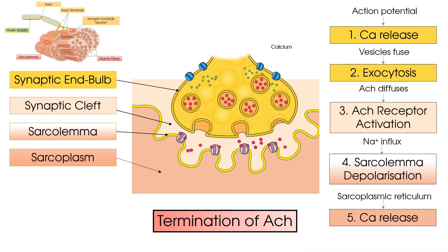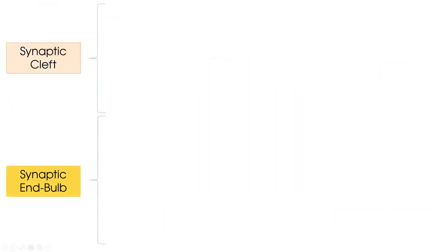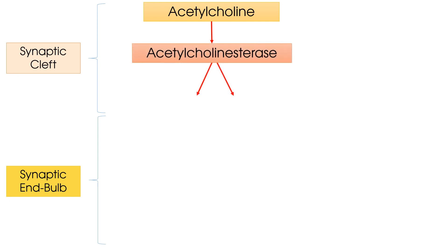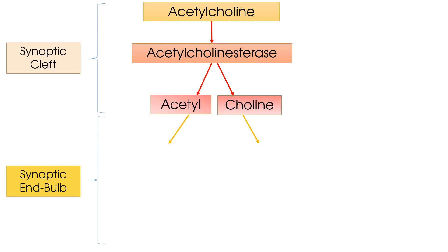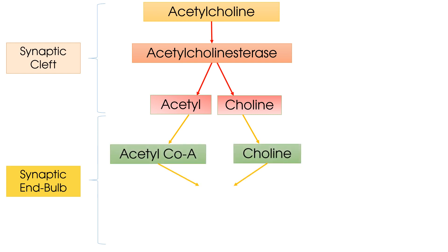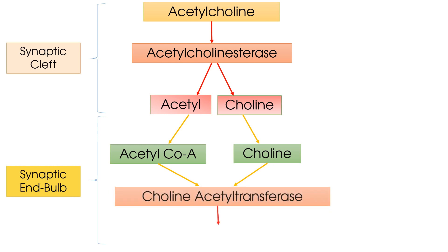Finally, we have the termination of acetylcholine activity. Acetylcholine's effect only lasts briefly due to the presence of the enzyme acetylcholinesterase within the synaptic cleft, which breaks down acetylcholine into acetyl and choline — products that are unable to independently activate the acetylcholine receptor. Acetylcholine is recreated within the synaptic end bulb from acetyl coenzyme A and choline, a process catalyzed by the enzyme choline acetyltransferase.